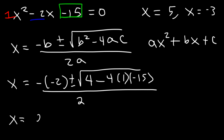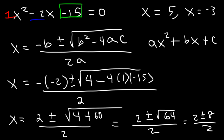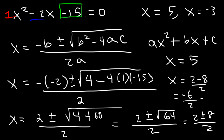So replacing b with negative 2: negative times negative 2 is positive 2. Then we have 4 — negative 4 times negative 15 is positive 60 — and 60 plus 4 is 64. The square root of 64 is 8. So we have 2 plus or minus 8 divided by 2. 2 plus 8 is 10, divided by 2 is 5 — the first answer. 2 minus 8 is negative 6, divided by 2 is negative 3 — the second answer. So you can solve a quadratic equation by factoring or by using the quadratic formula.